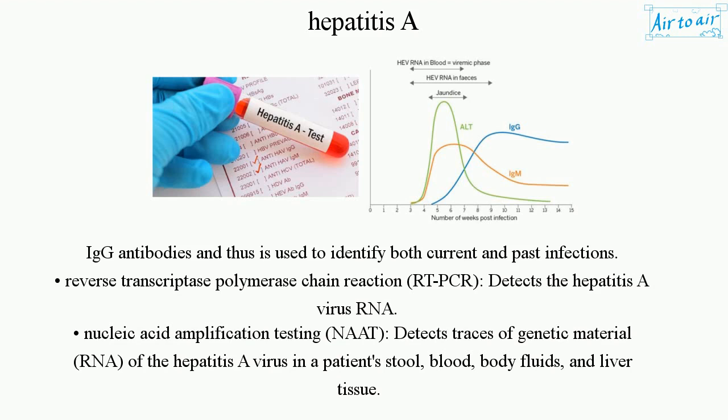Reverse transcriptase polymerase chain reaction (RT-PCR) detects the hepatitis A virus RNA. Nucleic acid amplification testing (NAAT) detects traces of genetic material (RNA) of the hepatitis A virus in a patient's stool, blood, body fluids, and liver tissue.